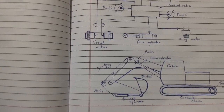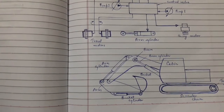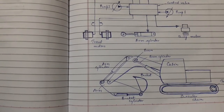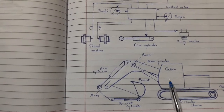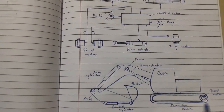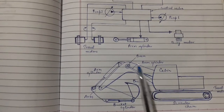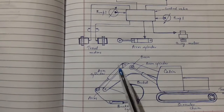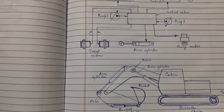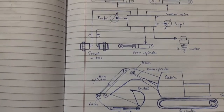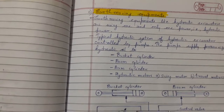Here is the diagram of the earth moving equipment, that is the hydraulic excavator. This is the cabin, this is the chain, this is the travel motor, boom, boom cylinder, arm cylinder, bucket, and bucket cylinder. That was the earth moving equipment.